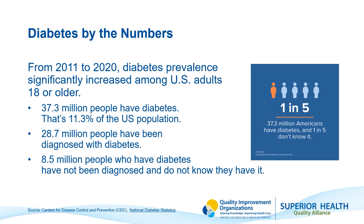Diabetes is an epidemic, and by addressing it we can improve health outcomes, reduce healthcare costs, and enhance overall public health. Early detection is crucial because diabetes can lead to chronic kidney disease and end-stage renal disease, which are major burdens on the Medicare system.